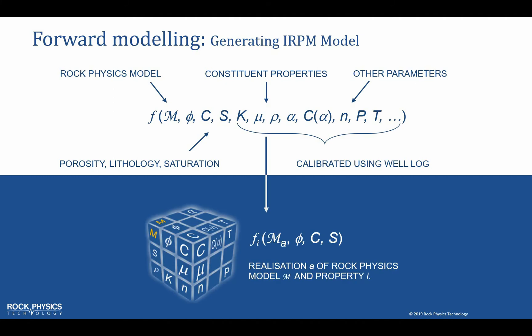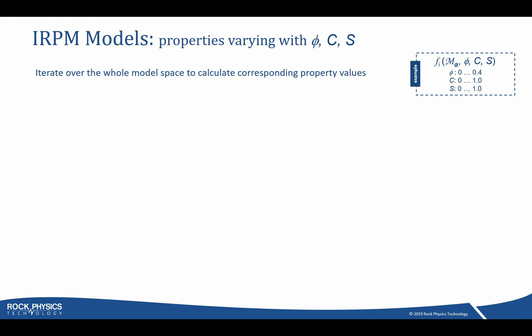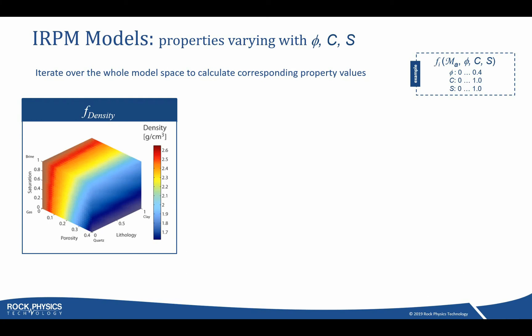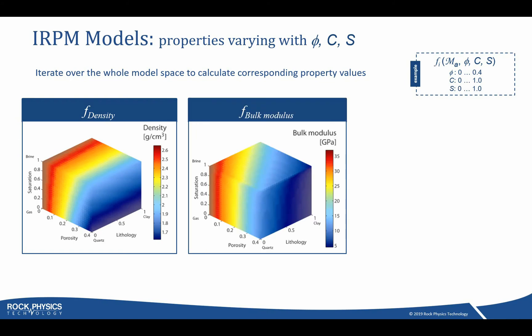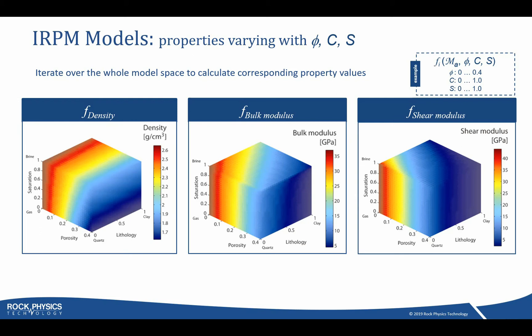Having calibrated a rock physics model, we can generate what we call an IRPM model, and it is this IRPM model you use as input in your inversion in ENTER. The IRPM model is a forward modeling where we systematically vary the porosity, lithology parameter, and the saturation. We can plot the result of the forward model density like a cube, such as the one you see here. Similarly for the bulk modulus and the shear modulus. Each axis represents the porosity, the lithology, and saturation — this is like a theoretical model space.